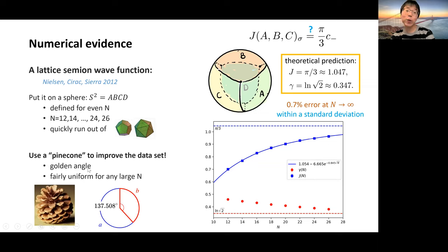For doing numerics, we use a trick to increase the data set by borrowing the design of the Fibonacci sequence, which uses the golden angle. For anything not too small, if we use this golden angle design, we get a fairly uniform distribution of points on the sphere. This is the plot for the data. If we do the extrapolation for J(A,B,C) modular commutator, it gives about 0.7% error with our theoretical prediction as n goes to infinity. This result is within the standard deviation of our result. So this looks consistent so far.